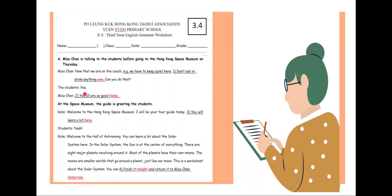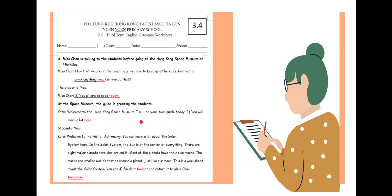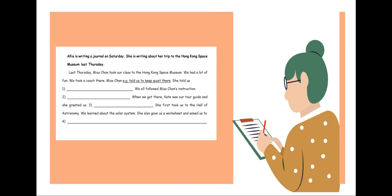This is your worksheet for this week. Ms. Chen is talking to students before going to the Hong Kong Space Museum on Thursday. There are some direct speech examples by Ms. Chen and by students. Some of the time and place expressions are highlighted. When you are doing the reported speech, you should change those highlighted words correctly. Of course, you also need to pay attention to pronouns and tense as well. I'm sure it will be easy peasy for you to finish your worksheet after this lesson.